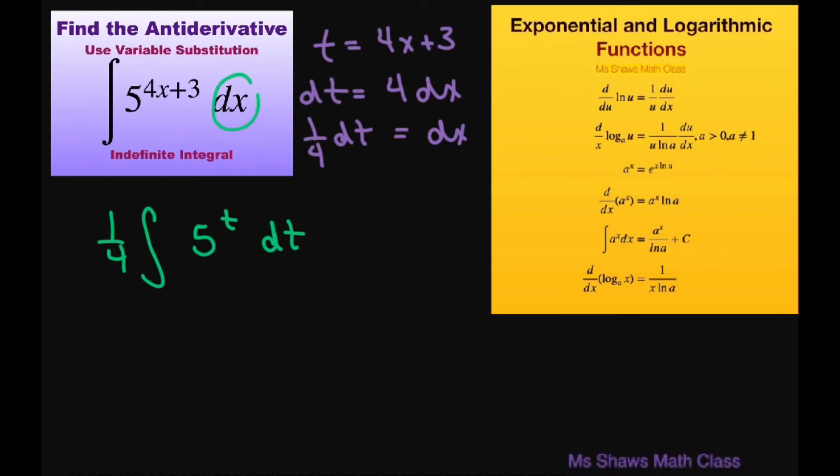This dx, I just separated it out. Using my formula now, this is going to give me 1 fourth times 5 to the power of t divided by log of t. Log of a, so 5 plus c.